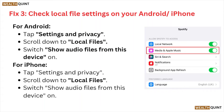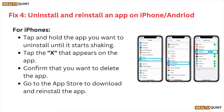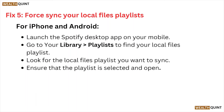Fix number four is uninstall and reinstall the app on iPhone or Android. For iPhone, tap and hold the app you want to uninstall until it starts jiggling. Tap the X that appears on the app and confirm that you want to delete the app. Then go to the App Store to download and reinstall the app. For Android phones, long press the app you want to uninstall, select Uninstall from the options, then go to the Google Play Store to download and reinstall the app.